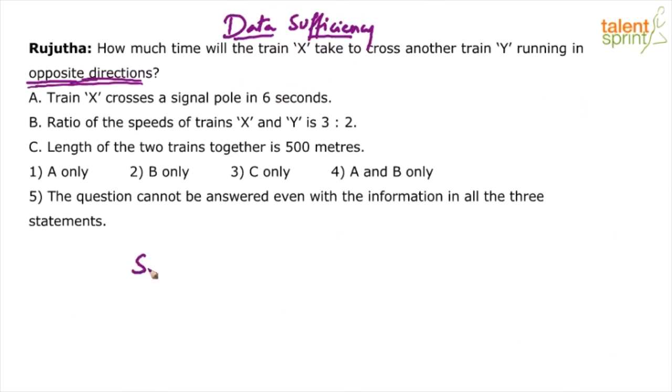The equation to be used here is speed of X plus speed of Y equals the length of X plus the length of Y divided by the time taken t. So what do you see here? Sum of the two speeds, sum of the speeds of the two trains, equals the distance traveled. In such cases, the distance traveled is the sum of the length of the two trains divided by time. This is standard concept which has been covered through our videos. Five variables.